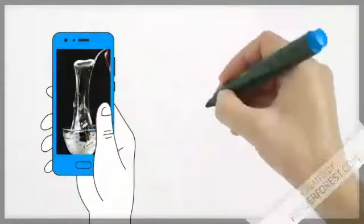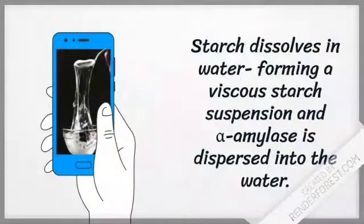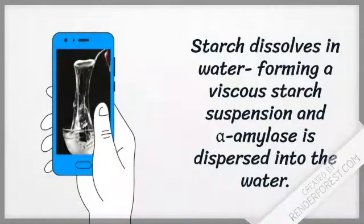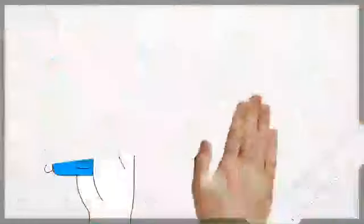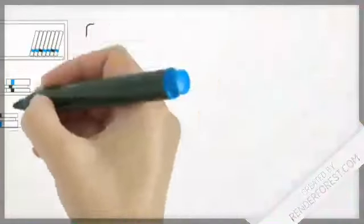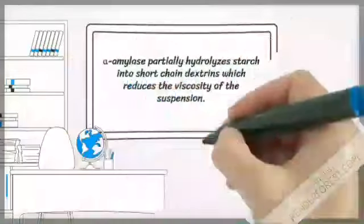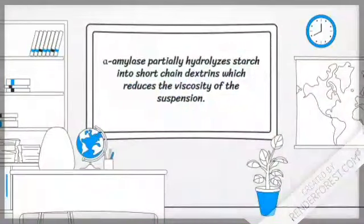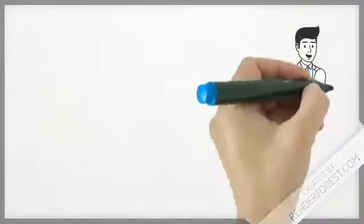Gelatinization is where starch dissolves in water, which forms a viscous starch suspension, and alpha-amylase is dispersed in the water. Alpha-amylase will then partially hydrolyze starch into short-chain dextrins, which reduces the viscosity of the suspension. This is the liquefaction step.